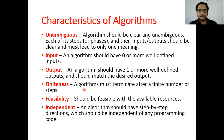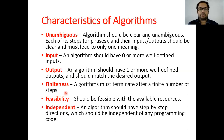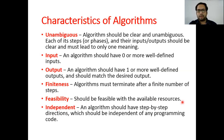Fourth is finiteness: algorithms must terminate after a finite number of steps. It should not be infinite, because infinite algorithms are of no use as they will never terminate. So it should be finite so that we can receive a particular output as the result. Fifth is feasibility: the algorithm should be feasible with the available resources and implementable within those resources.